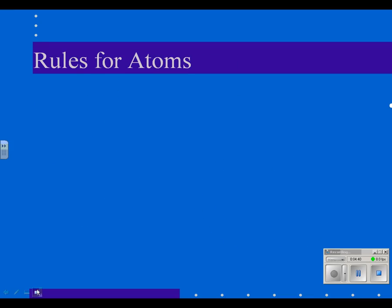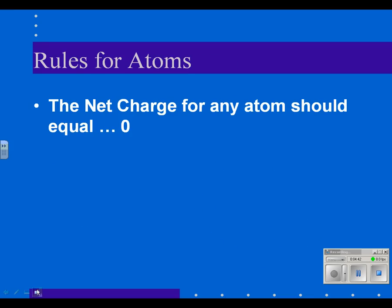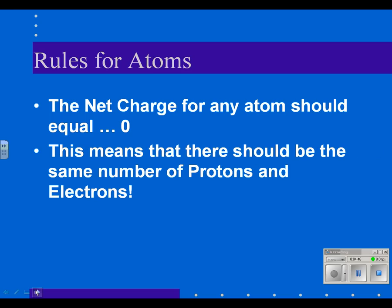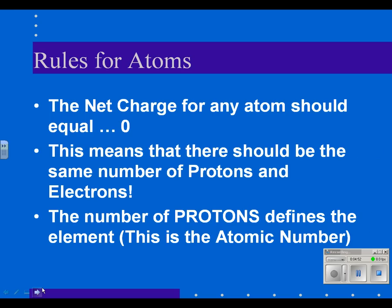So then the net charge for any atom should be zero. It means there should be the same number of protons and electrons. Remember that the number of protons defines the atom. We call that the atomic number.